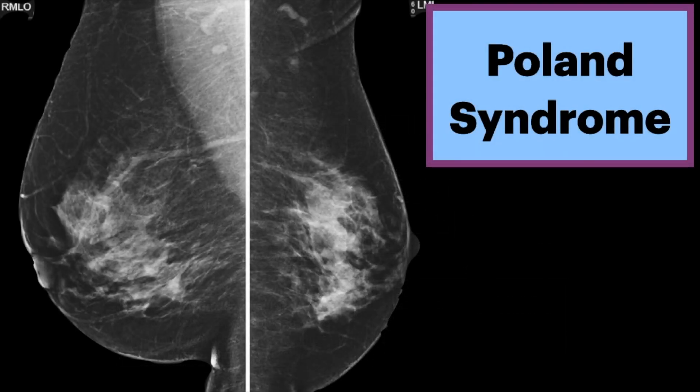On mammography, one may see hypoplasia of the breast or the pectoralis major muscle, particularly on the MLO view.